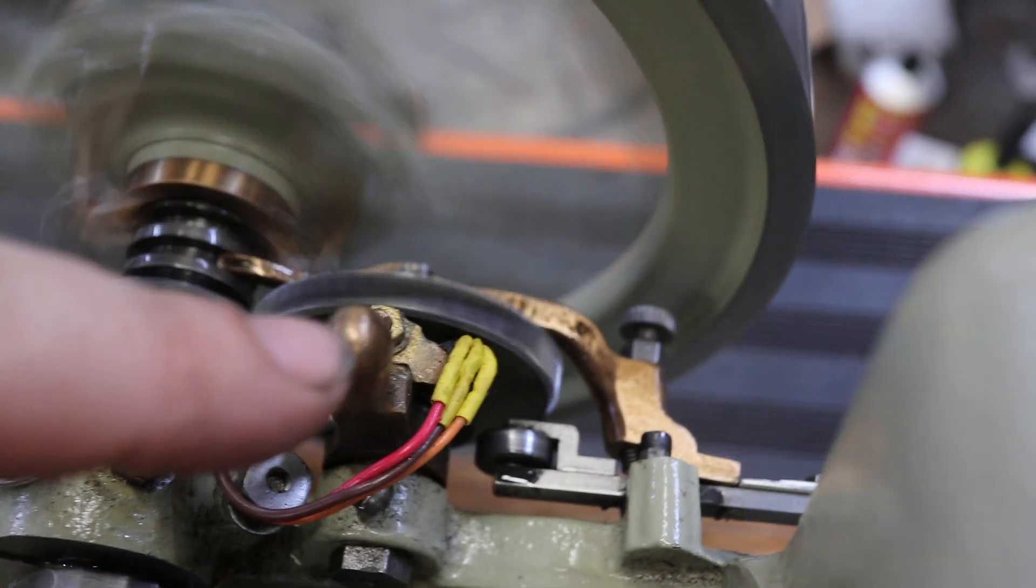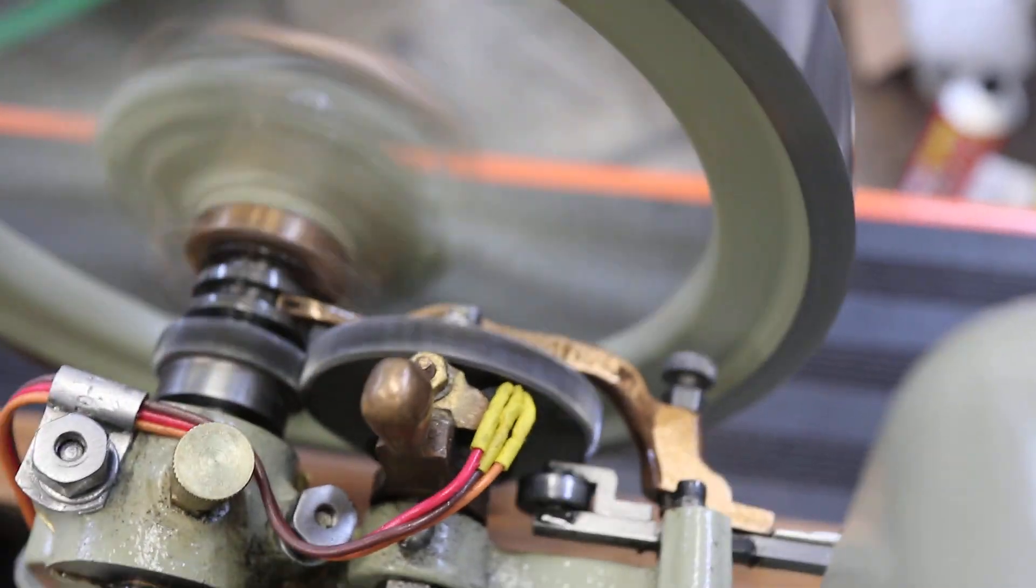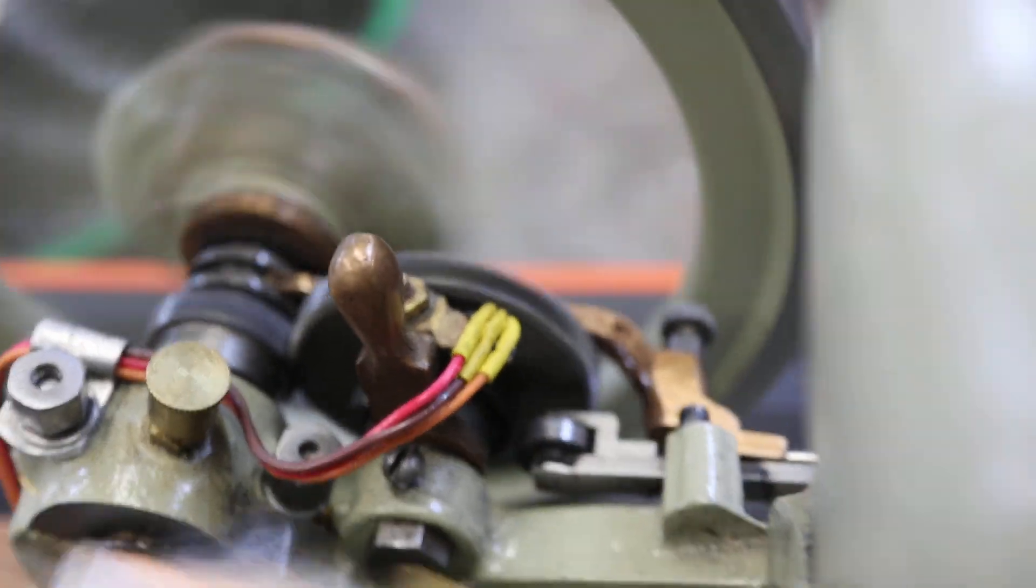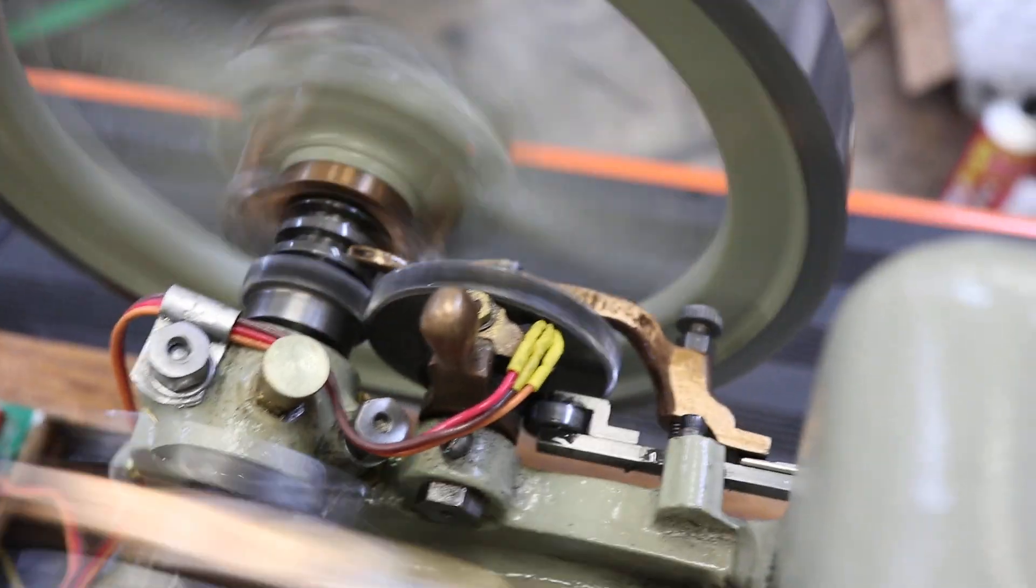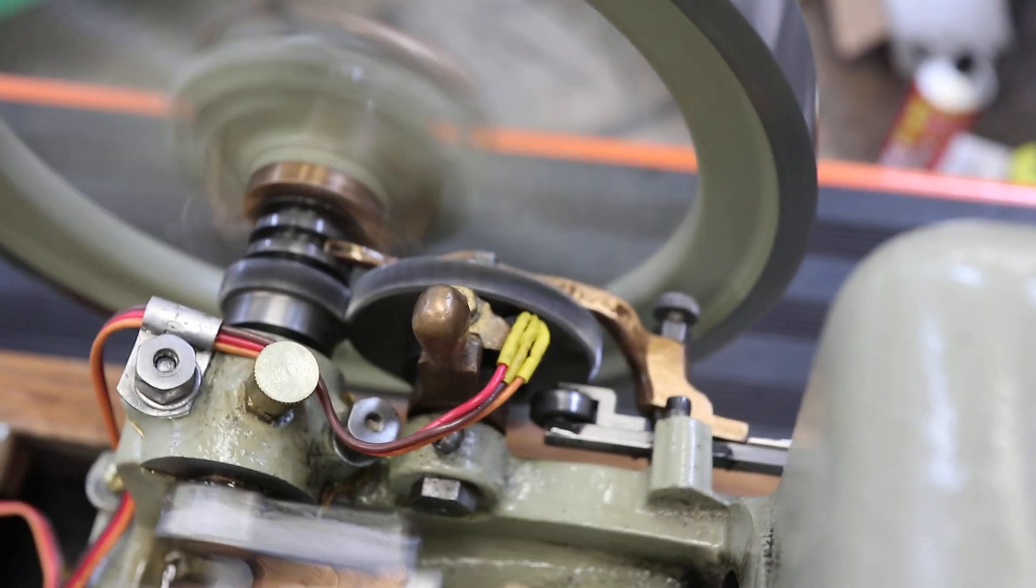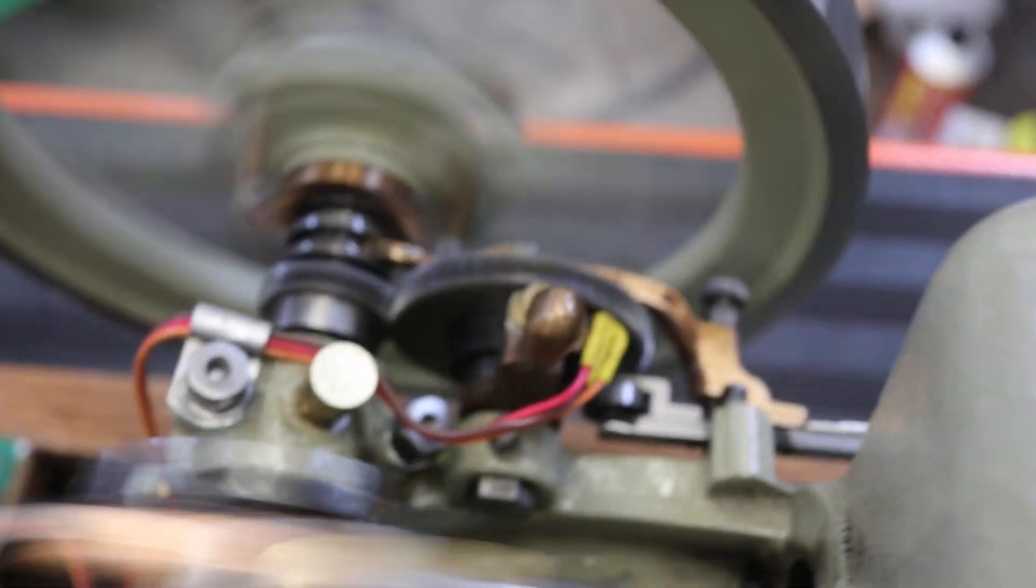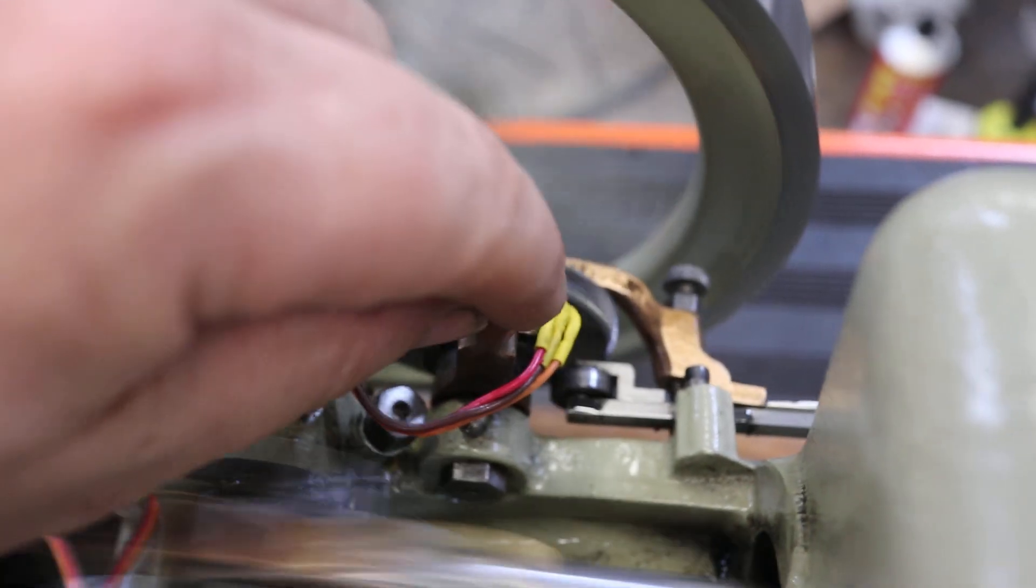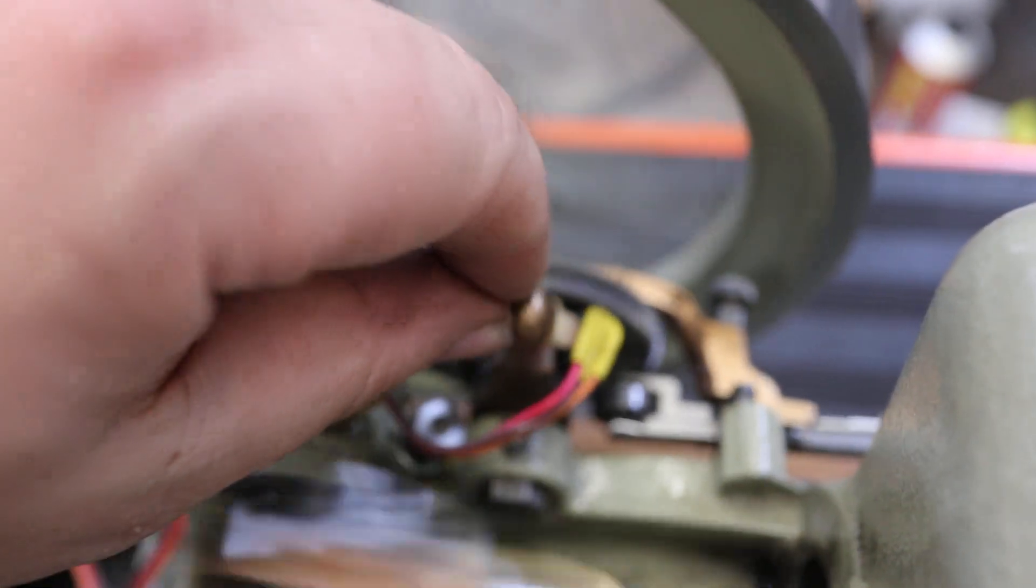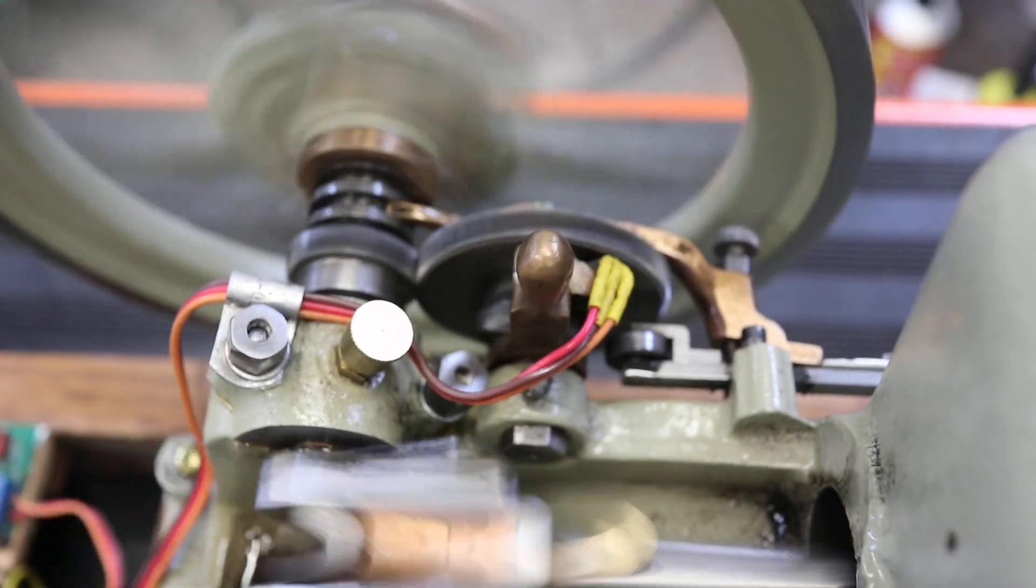And then on this little lever it's got a little sensor and on the side of that cam gear is a little magnet and so every time that magnet goes by the sensor is when it fires the spark plug. And you can actually change the timing, advance the spark or retard the spark by moving the lever there. But it seems to like to be about straight up and down.